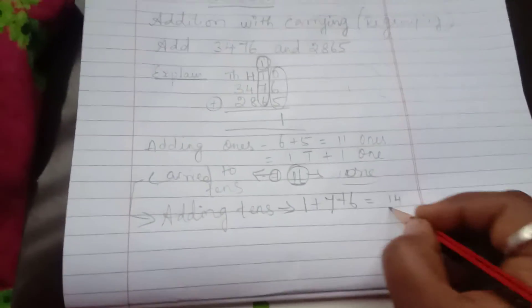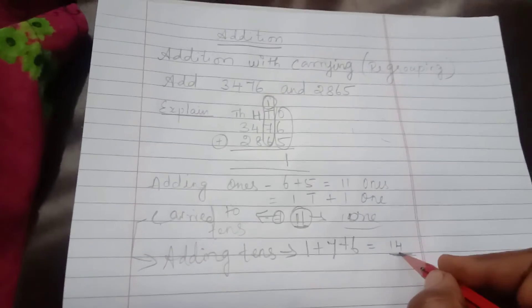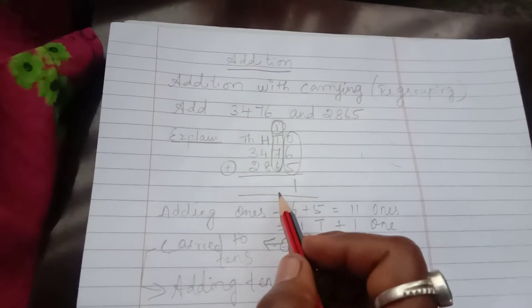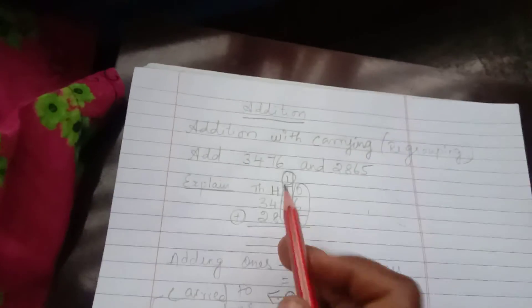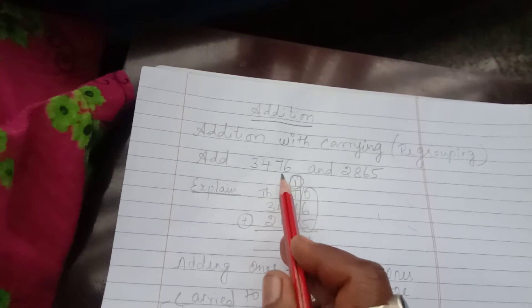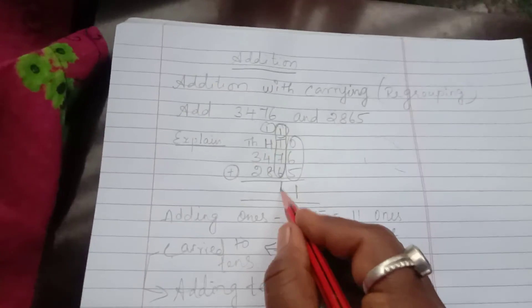So we got the number 14. Now see, first number in tens place, another 1 is there. So this is going to carry it to hundreds place. So 4 in tens place, I am going to write the 4 in tens place.